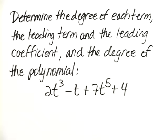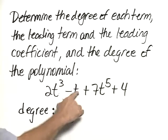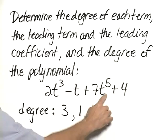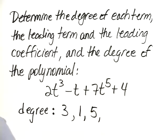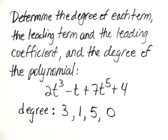So the degree of each term. For this term, it's 3. For this term, it's 1. For this term, it's 5, and for the constant term, the degree is 0.